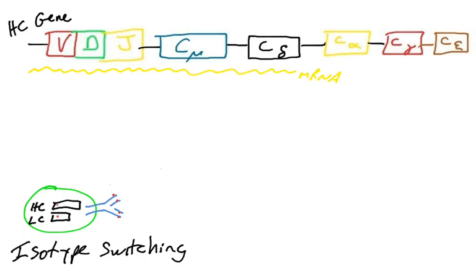In a naive B cell, the mRNA is read through the variable region, and then the constant mu and constant delta regions, in order to make either the heavy chain mu version, which will make IgM, or the delta version, which will make IgD. That's in a developing B cell, a naive B cell. But once a B cell has undergone clonal expansion and has gotten a signal from the helper T cell, the cell can now also undergo isotype switching.